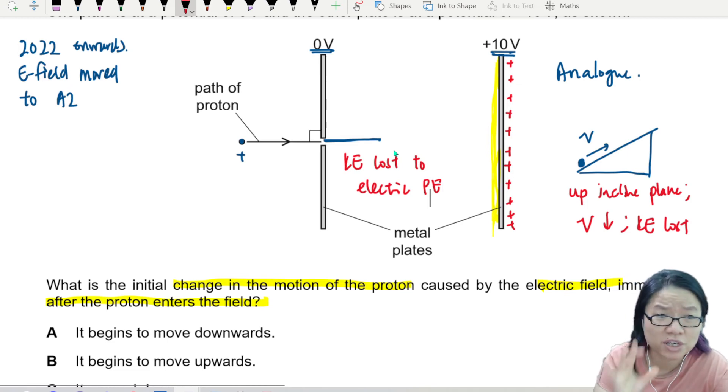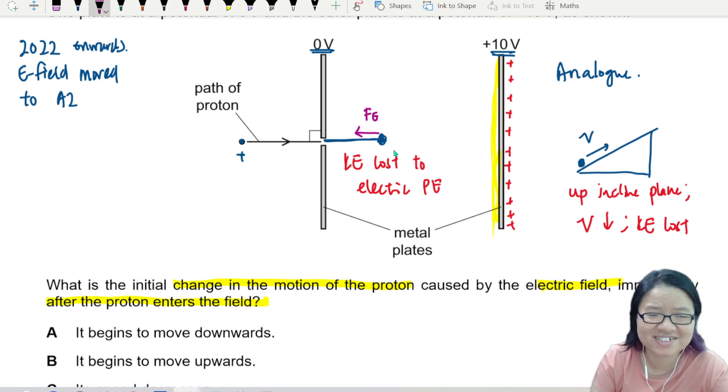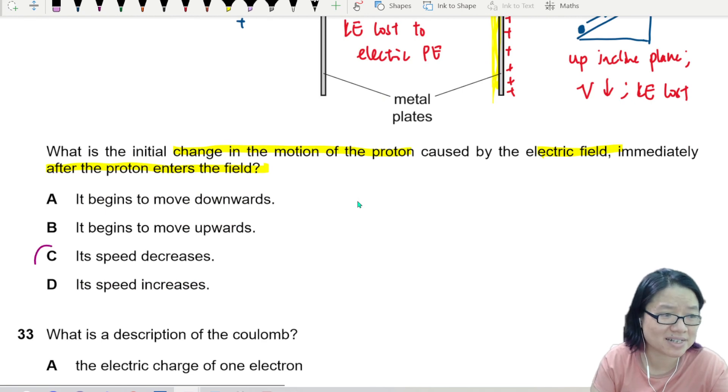Or the positive charge is actually actively pushing away the proton. So let's say this is my proton. The proton will experience an electric force in this direction. I don't want you to go away. So the proton will slow down. Okay? That's why the answer is C.